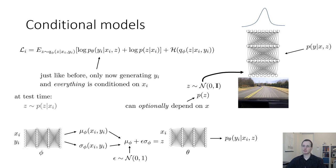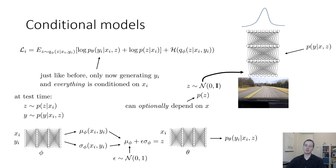At test time, you sample z from p of z given x_i and sample y from p of y given x_i and z. You have a choice: you can either learn the prior p of z given x_i — which can be another neural network — or you can have a fixed prior where z is distributed according to an unconditional distribution p of z. That's a design choice you can make, and that's a conditional variational autoencoder.